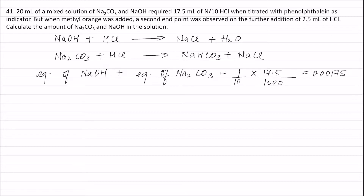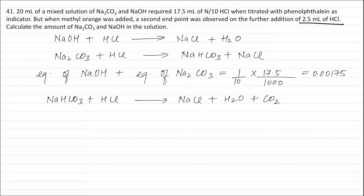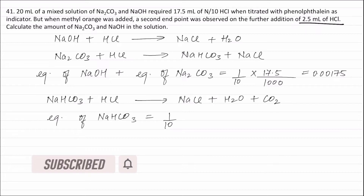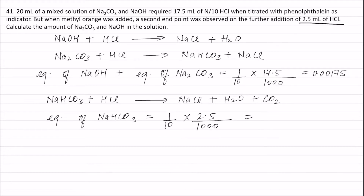When methyl orange is used as indicator, the reaction is NaHCO₃ + HCl → NaCl + H₂O + CO₂. The equivalence of NaHCO₃ equals equivalence of HCl. According to the question, the second endpoint was observed on further addition of 2.5 mL of HCl. Therefore, equivalence of HCl = (1/10) × (2.5/1000) = 0.00025 equivalents.